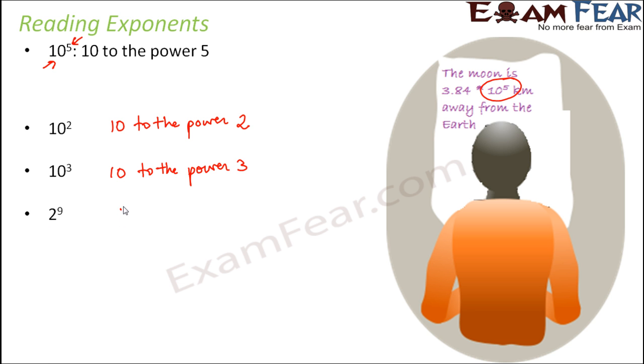What about this? This would be 2 to the power 9. And what about this? This is minus 15 because these could be positive or negative integers. The base could be anything. So this is minus 15 to the power 4. So this is how we read exponents.